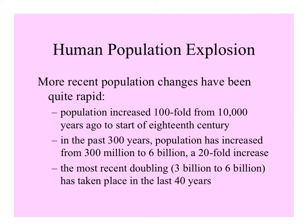From 10,000 years ago to the start of the 18th century, population on Earth increased 100 times. But in the past 300 years, population has increased from 300 million to 6 billion — a 20-fold increase. Actually, now the population is in excess of 7 billion. This most recent doubling from 3 billion to 6 or 7 billion has taken place in the last 40 to 50 years.